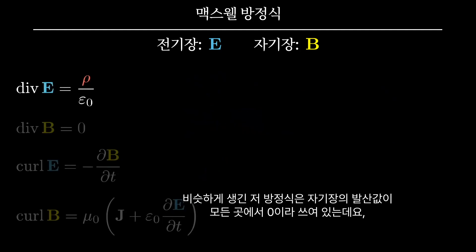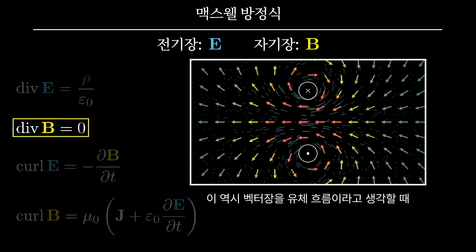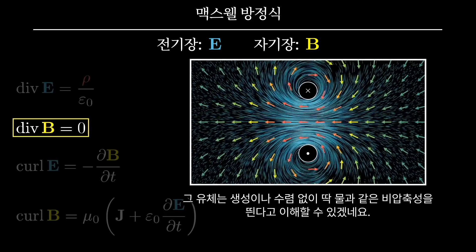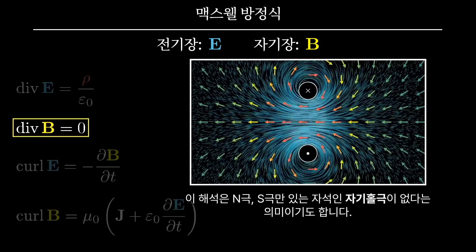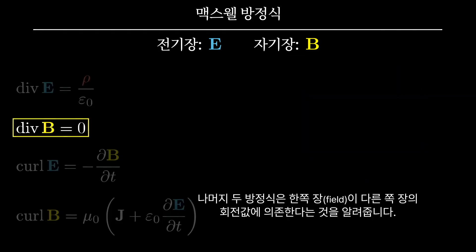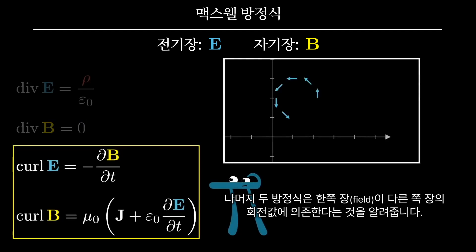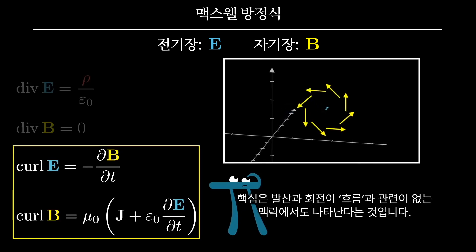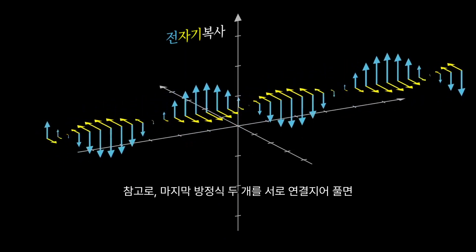Similarly, another important equation is that the divergence of the magnetic field is zero everywhere. You can understand that by saying that if the field represents a fluid flow, that fluid would be incompressible, with no sources and no sinks — it acts just like water. This also has the interpretation that magnetic monopoles — something that acts just like a north or south end of a magnet in isolation — don't exist. The last two of Maxwell's equations tell us that the way one of these fields changes depends on the curl of the other field. And as a sidenote, the back and forth from those last two equations is what gives rise to light waves.